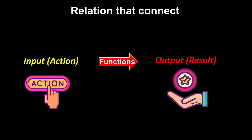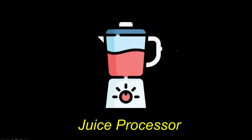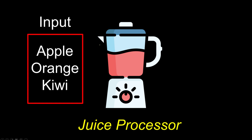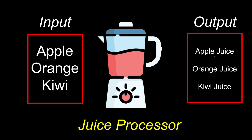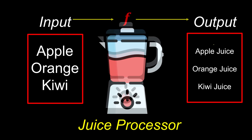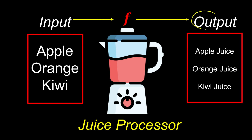Chapter 1: Functions. First of all, we're going to look at what is the meaning of functions. For me, functions are nothing but just relations that connect all of our actions to the result. It basically tells us that if we take these actions, this will be my result. So imagine this juice processor acts like a function — it does nothing until you put some fruits into it.